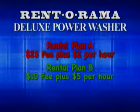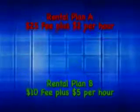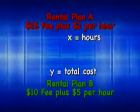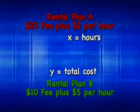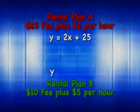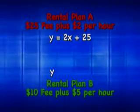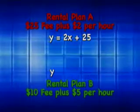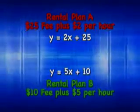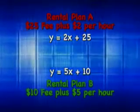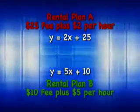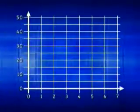We can write the plans as equations. If we let X equal the number of hours and Y equal the total cost, then rental plan A could be written as Y equals 2x plus 25. Plan B could be written as Y equals 5x plus 10. These two equations are written in slope-intercept form, so we can graph them on a coordinate grid.